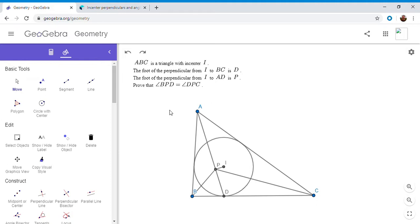So it's a very simple problem, although not that easy. So if you want to try to solve it, feel free to pause the video. Alright, so now I'm going to go over it. So we have a triangle ABC with incenter I. The foot of the perpendicular from I to BC is D. And the foot of the perpendicular from I to AB is P. And we want to show that angle BPD is equal to angle DPC.